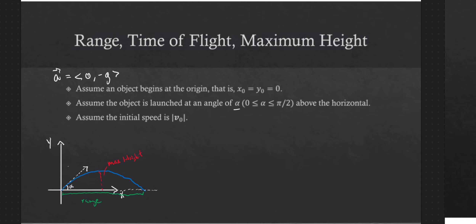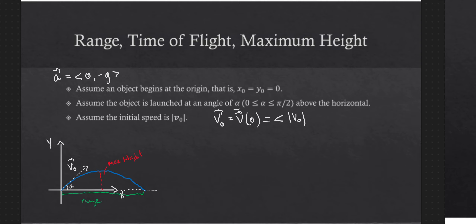So our initial velocity vector v naught — we want to keep this as general as possible with angle alpha between 0 and pi over 2 and initial speed equal to the magnitude of v naught. So v of 0 will be the vector with horizontal component v naught cosine alpha and vertical component v naught sine alpha. Just some basic trigonometry.